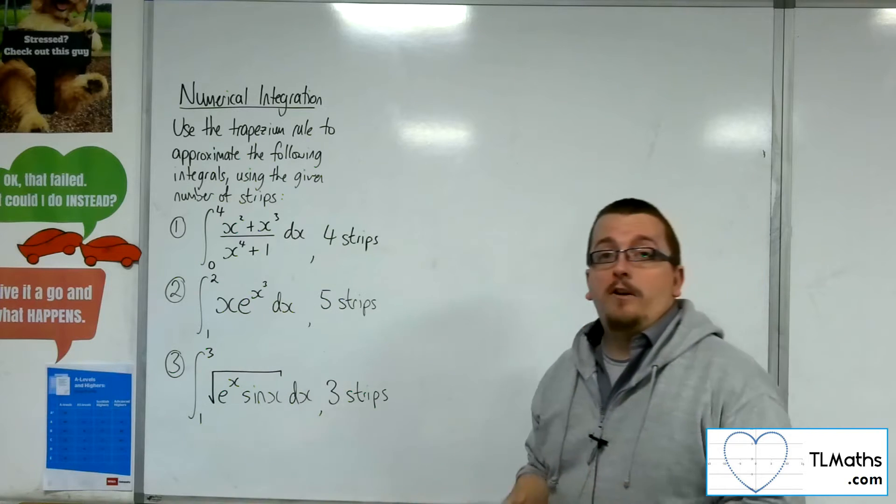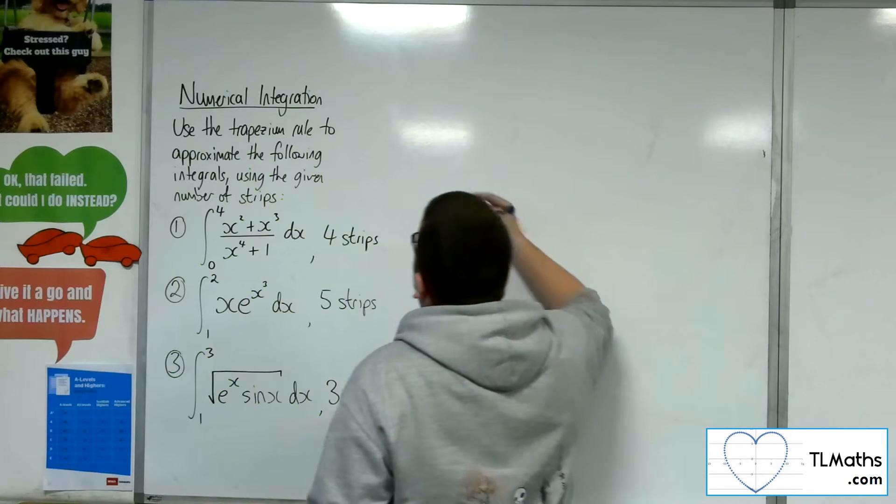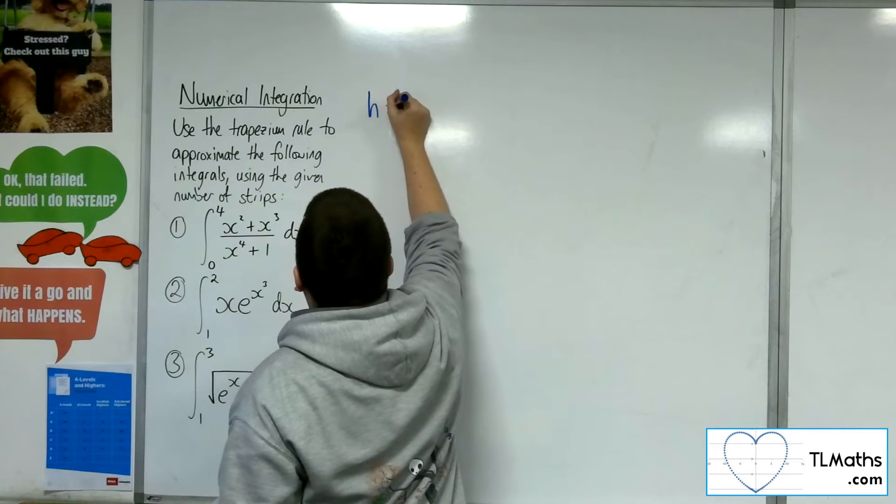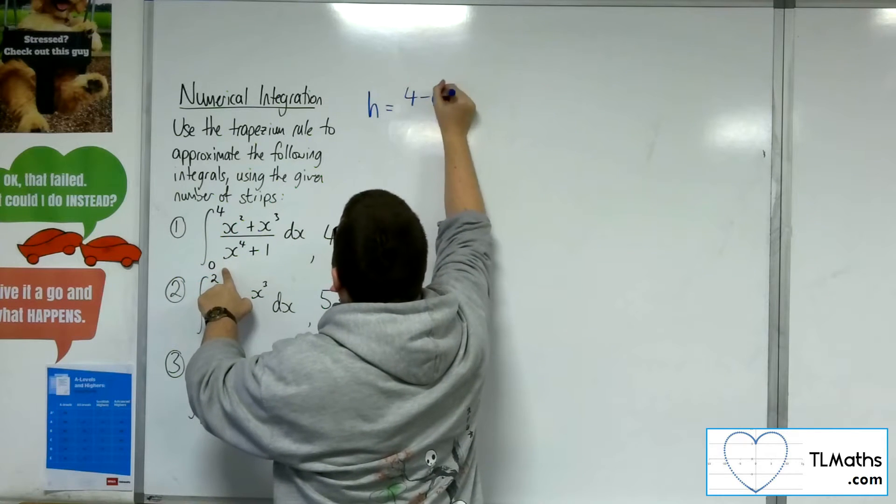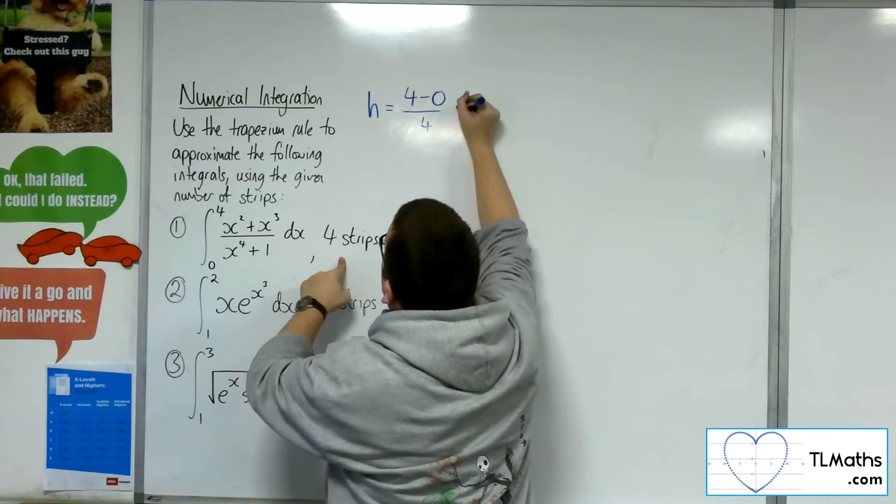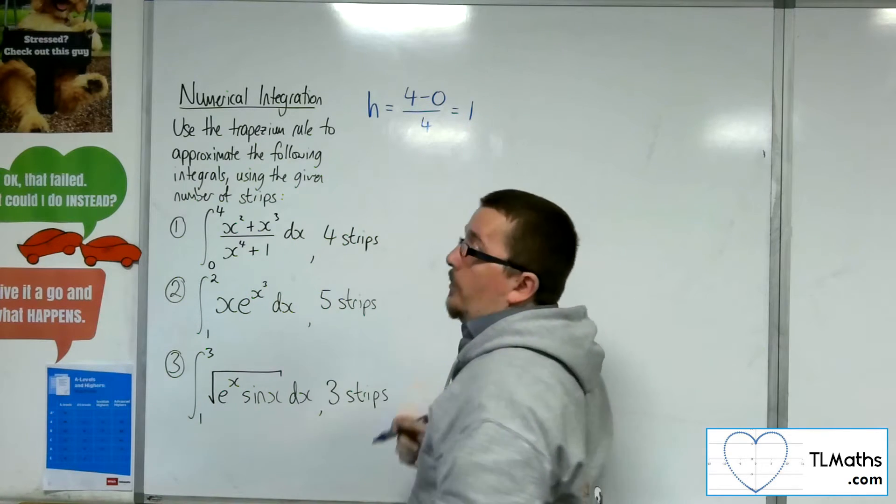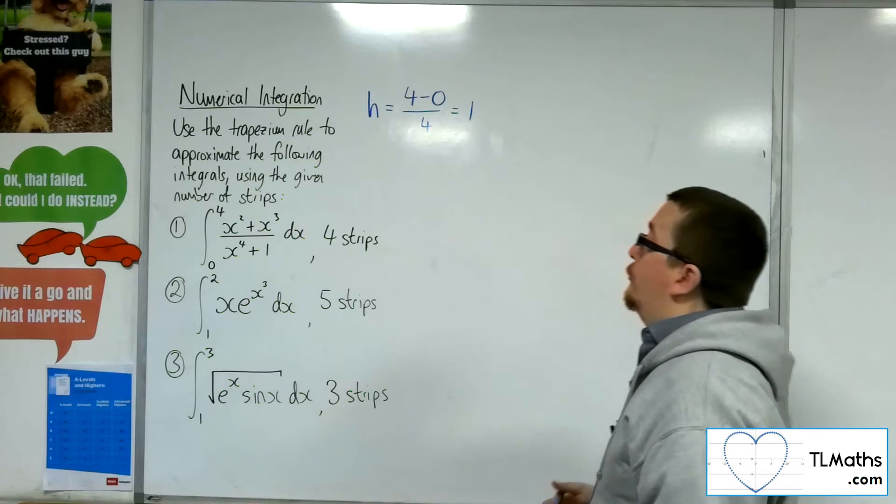The first thing to do is to work out your strip length. So that can be calculated using H equals B minus A, so four take away zero in this case, divided by the number of strips. So in our case, in our first example, H is 1, so that's nice and straightforward.